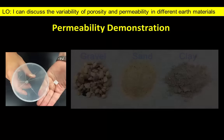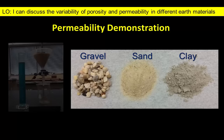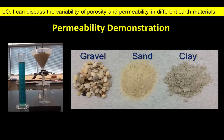We've designed an experiment to demonstrate how permeability varies among gravel, sand, and clay — the common sediments found on Earth's surface. We've taken a funnel and filled it with each type of sediment, added a tiny piece of filter paper to prevent the sediment from flowing through the funnel, then poured a constant amount of water into each setup and watched to see how long it took to collect in the beaker below. The faster the flow of the water, the higher the permeability.